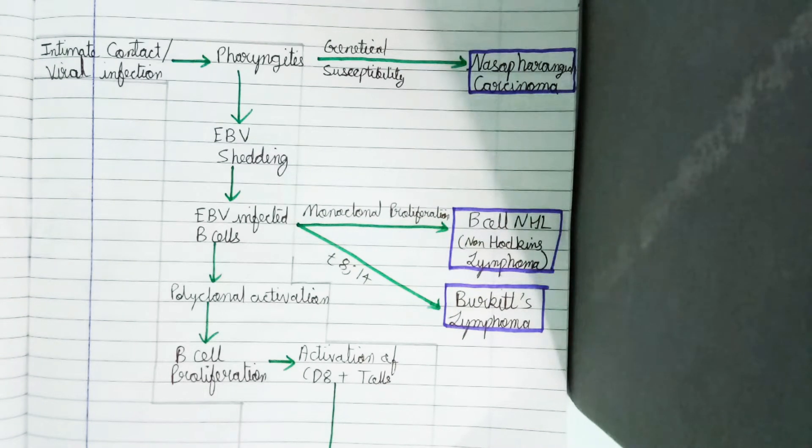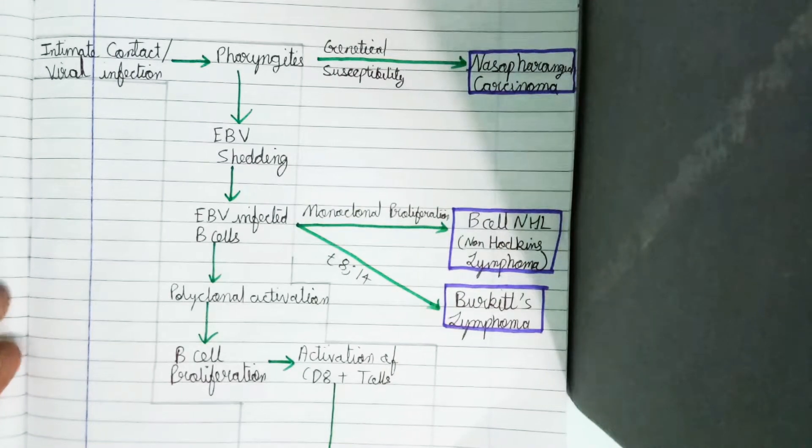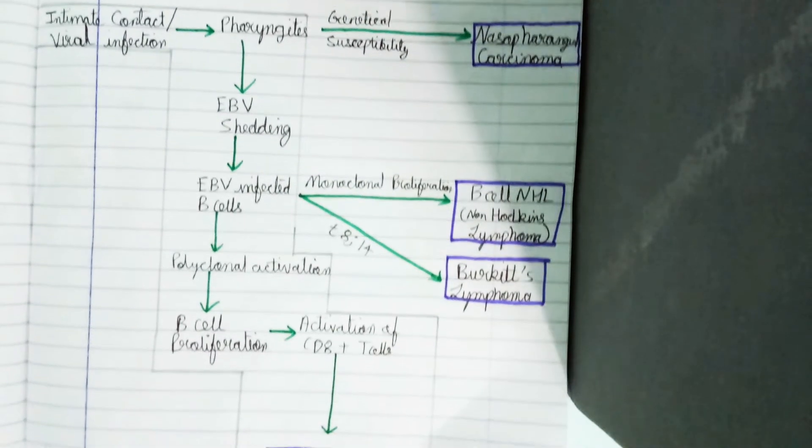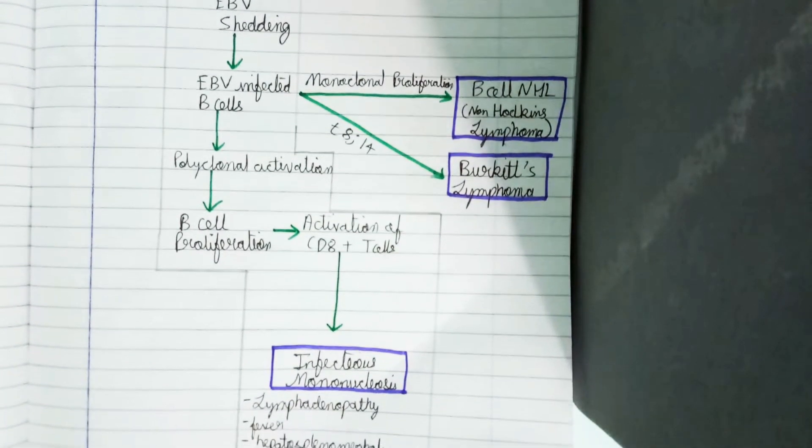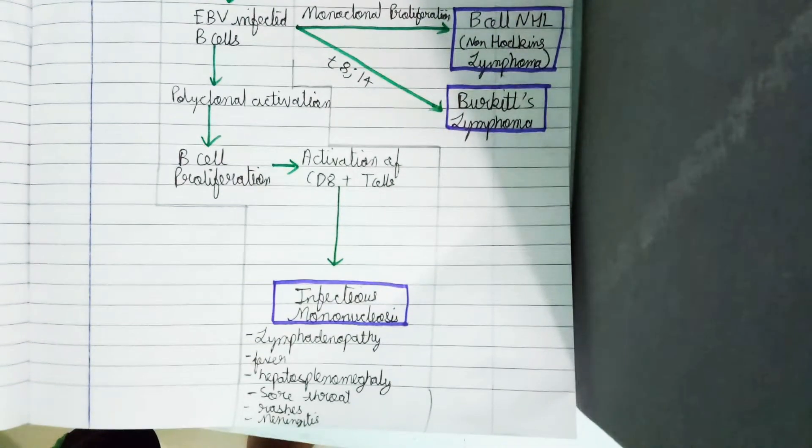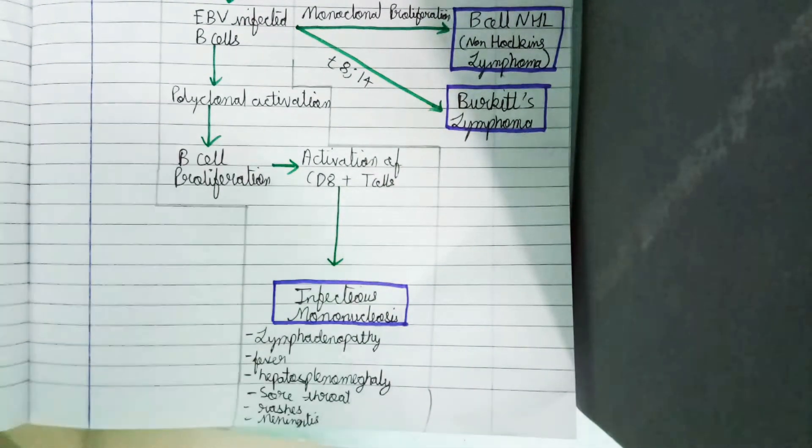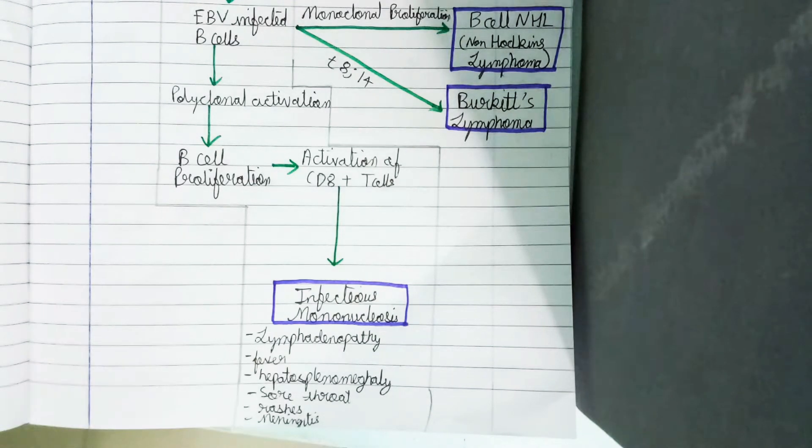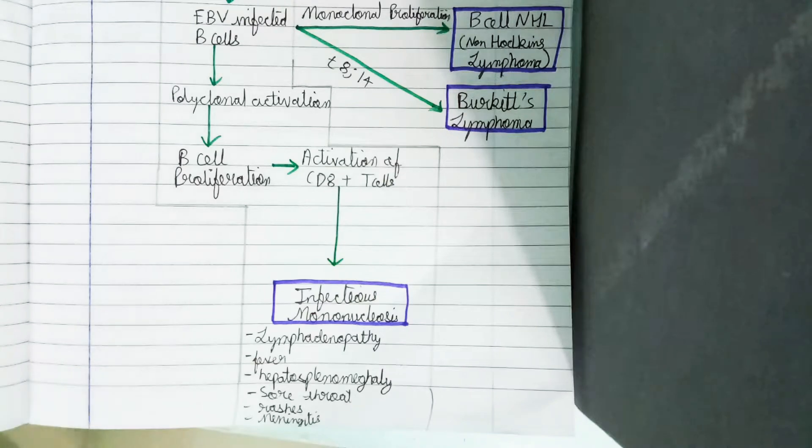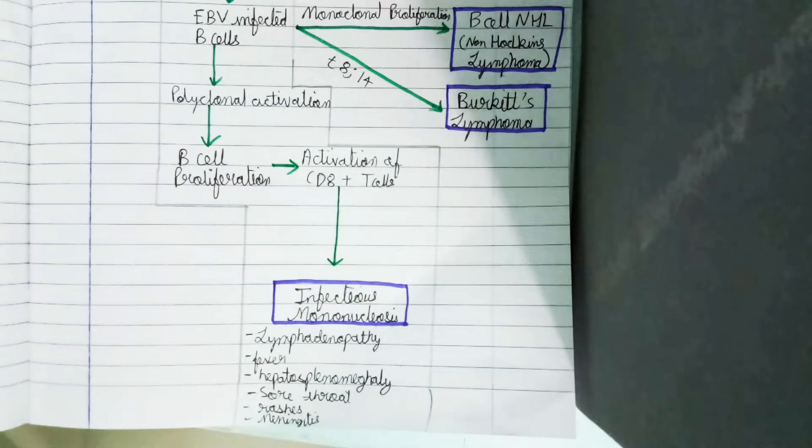There the EBV cells get shed and then EBV-infected B cells are formed. They go into polyclonal activation, then cause B cell proliferation, which activates the CD8+ T cells, which are our lymphocytes. This causes infectious mononucleosis, which includes lymphadenopathy, fever, hepatosplenomegaly, sore throat, rashes, meningitis, and encephalitis.